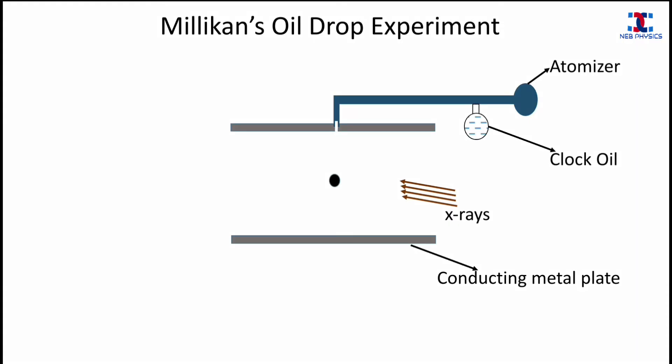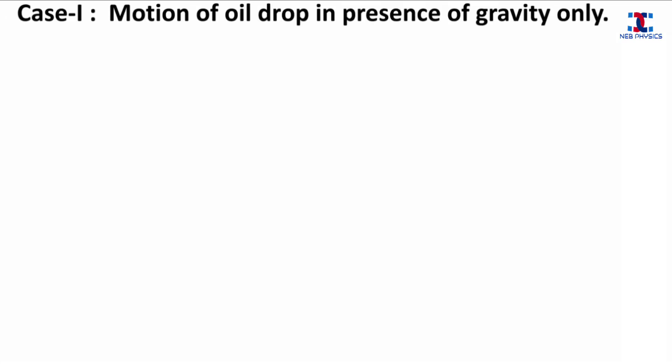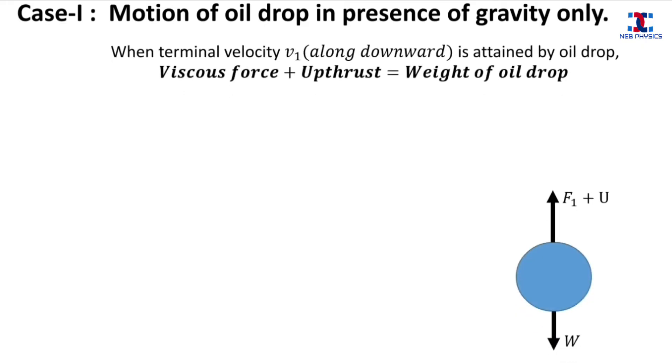Then the motion of a single droplet of oil is observed between the two parallel plates by using a microscope. The motion of the droplet is observed in two conditions. In the first condition, the motion of the droplet is observed in the presence of gravity only, when the droplet is falling freely between the two parallel plates.